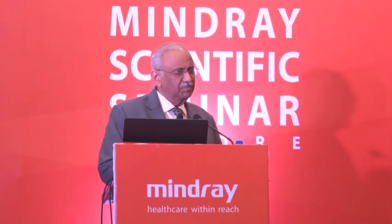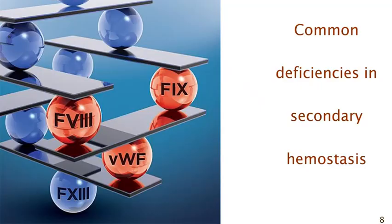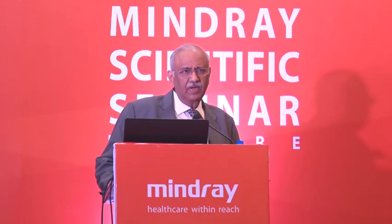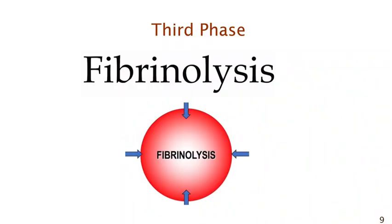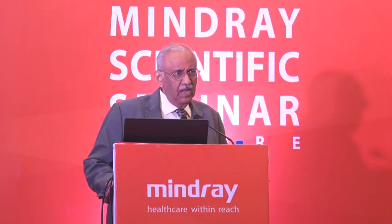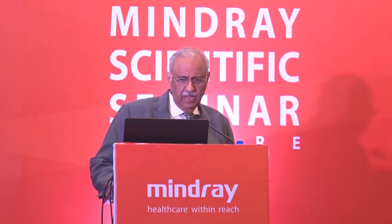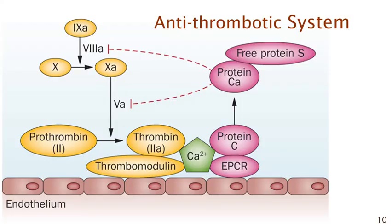From that complex diagram, the most important thing is that a genetic bleeder invariably has deficiency of one of these proteins — factor 8, factor 9, von Willebrand factor, and maybe factor 13. The third phase is fibrinolysis, where the plasminogen-plasmin system dissolves the clot so that you don't get thrombosis. Also, to countercheck all this is the antithrombotic system — antithrombin, protein C, protein S, and thrombomodulin.